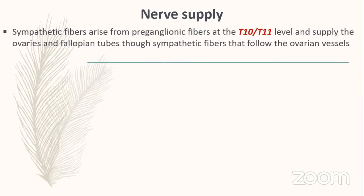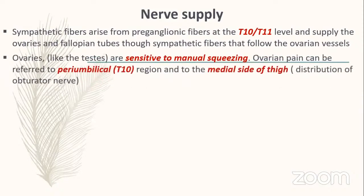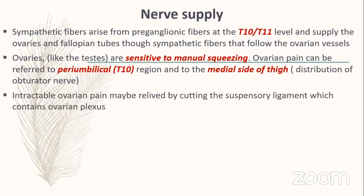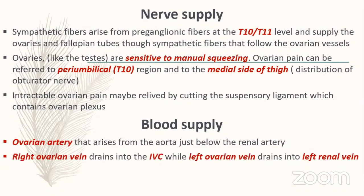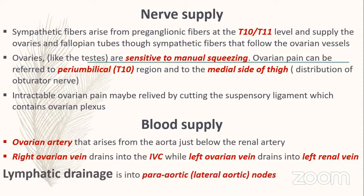Nerve supply of ovary: sympathetic preganglionic fibers from T10–T11 follow the ovarian vessels. Ovarian pain can be referred to the peri-umbilical region (T10) and to the medial side of the thigh via the obturator nerve. Intractable ovarian pain may be relieved by cutting the suspensory ligament. Blood supply: ovarian artery from the aorta just below the renal artery. Right ovarian vein drains into the inferior vena cava; left drains into the left renal vein. Lymphatic drainage is into the para-aortic or lateral aortic nodes.